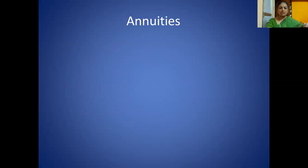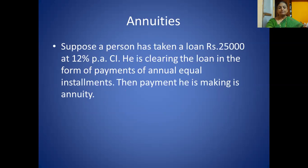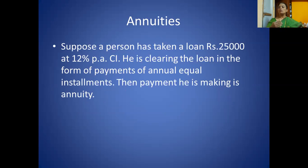One more example: a person has taken a loan of rupees 25,000 at 12% per annum compound interest. He is clearing the loan in the form of a payment of annual equal installments — that is called EMI, equal monthly or equal annual installments. The payment he is making is called as annuity.